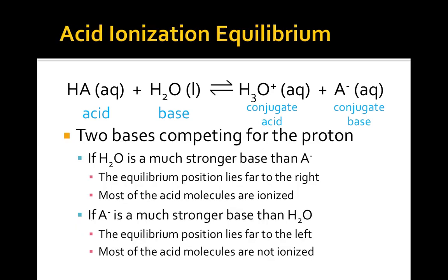This generic acid-ionization equilibrium can be understood as two bases, water and A-minus, both competing for the proton. If water is a stronger base than the anion, the equilibrium position will lie far to the right and most of the HA molecules will be ionized. On the other hand, if the anion is a stronger base, the equilibrium position will lie far to the left and most of the HA molecules will remain unionized.